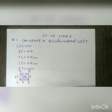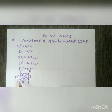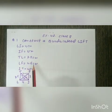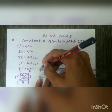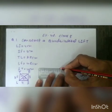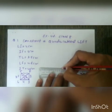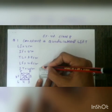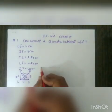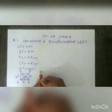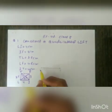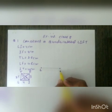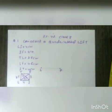Now let us construct this quadrilateral. Since two diagonals are given, I will first take diagonal LF which is 4.5 cm. I am drawing a 4.5 cm line segment. This point is L and this point is F — so LF is our diagonal.